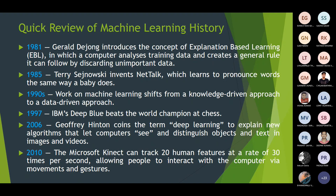In the year 2010, Microsoft Kinect was used to track 20 human features at the rate of 30 times per second, allowing people to interact with the computer via movements and gestures. This was developed by Microsoft Corporation in the year 2010.